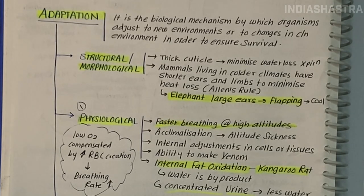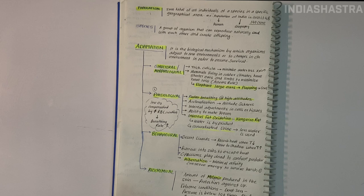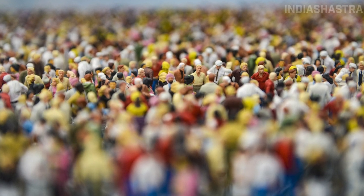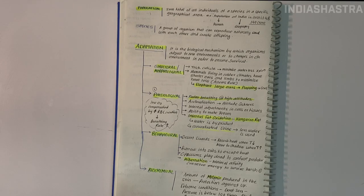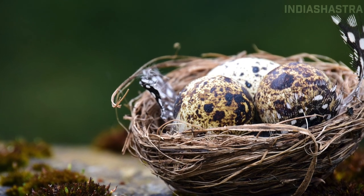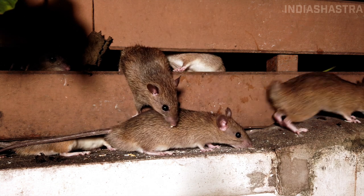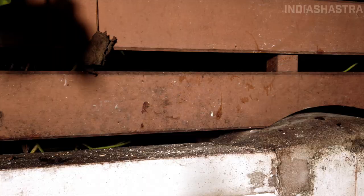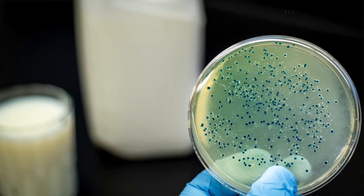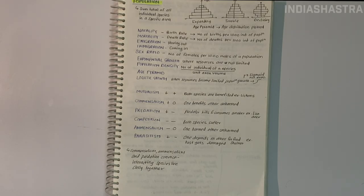Now let us move to the second part of the chapter: populations. In nature, we rarely find isolated single individuals of any species. The majority live in groups in a well-defined geographical area, sharing similar resources and interbreeding — constituting a population. Examples include all rats in an abandoned dwelling, teakwood trees in a forest, bacteria in a culture plate, lotus plants in a pond, and all humans in India. Population ecology links ecology to population genetics and evolution.